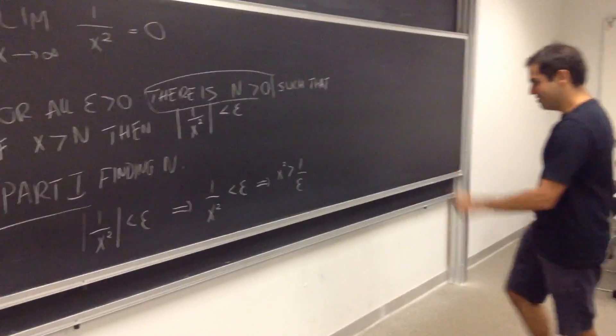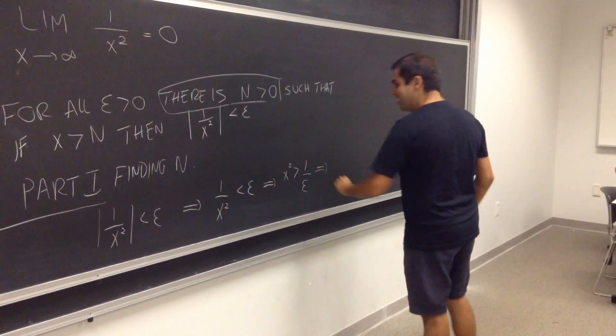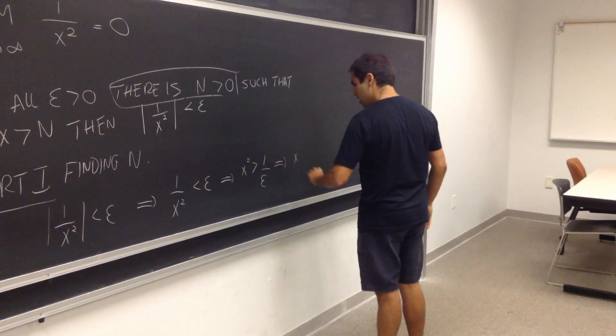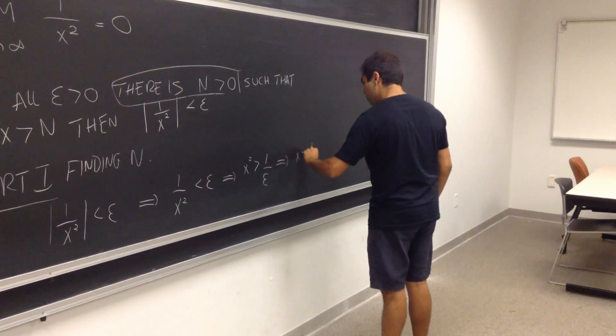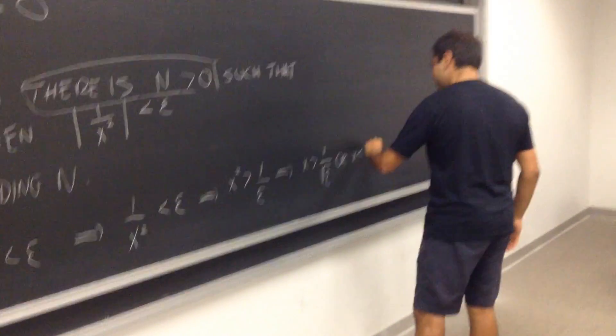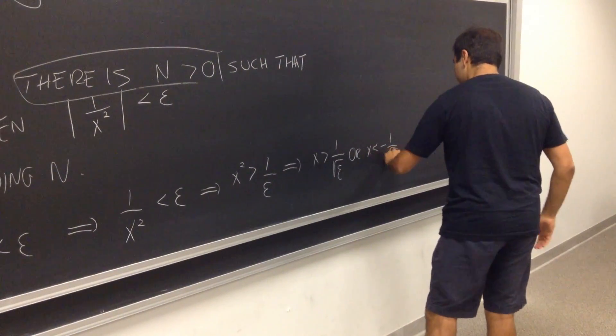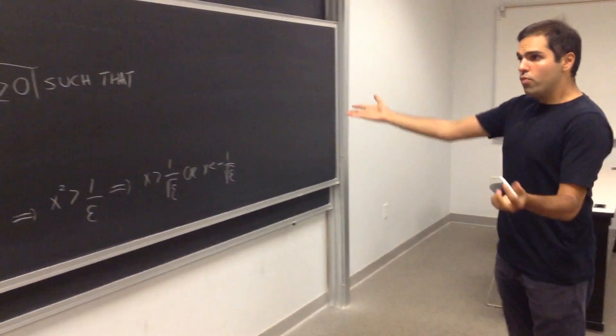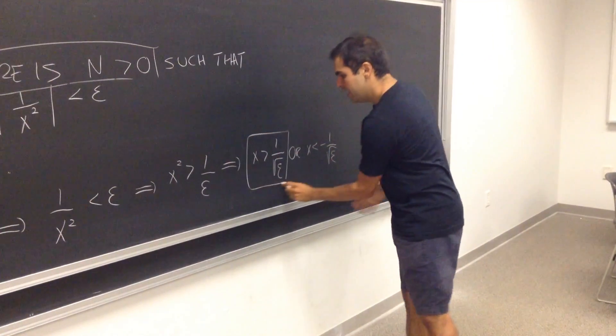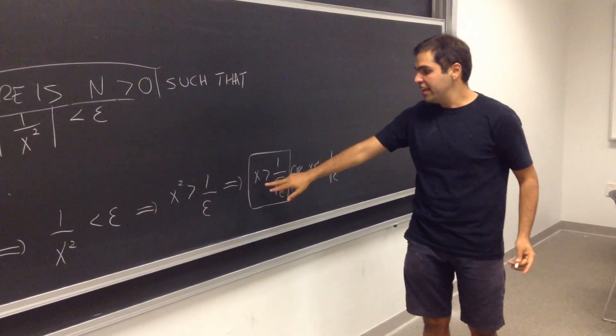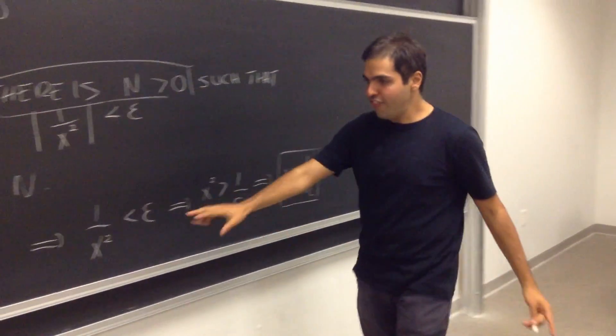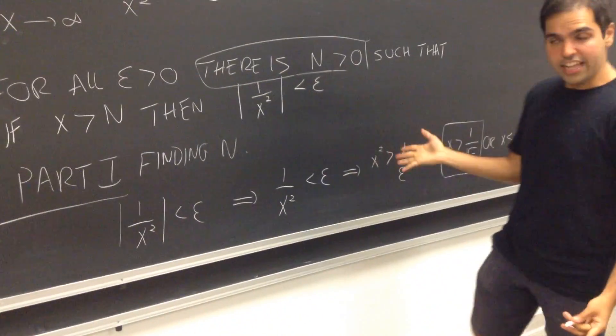changing the sign of the inequality, and therefore, we have either x is greater than 1 over square root of epsilon, or x is less than minus 1 over square root of epsilon. Sure, we have two things, but we actually need one of those things. In fact, we can then show that if x is bigger than this number, that, in fact, this will be less than epsilon.